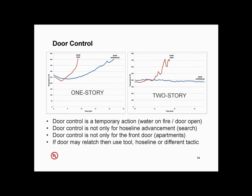Door control is not only for hose line advancement. I'm not suggesting you search ahead of the hose line — but if you have to, and there are conditions where you may have to, one of the best things you can do is control that door behind you. That way it's not a race. If you can buy yourself three extra minutes or more to get that victim out before it flashes on you — because you don't have a hose line — this is a tool to consider. Moving through a house, every door you can control cuts you off from the flow path and buys you time to search the area you're in.